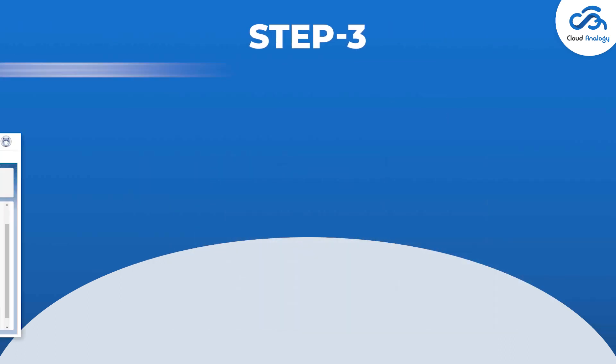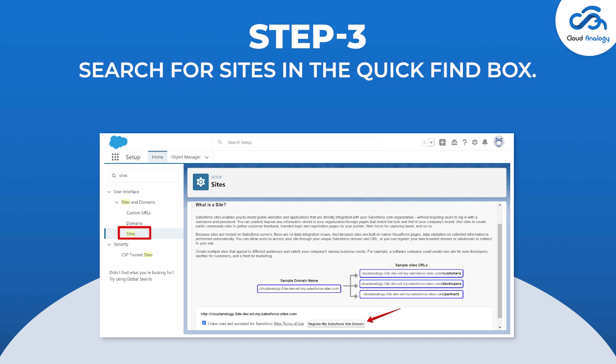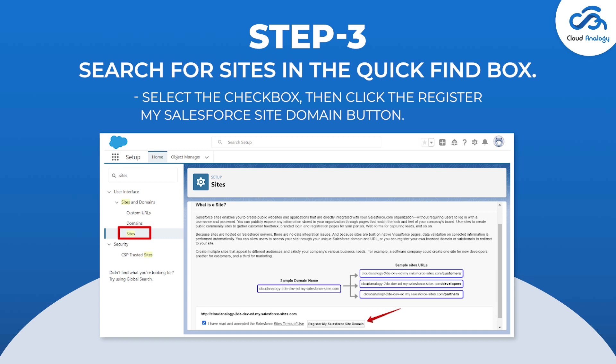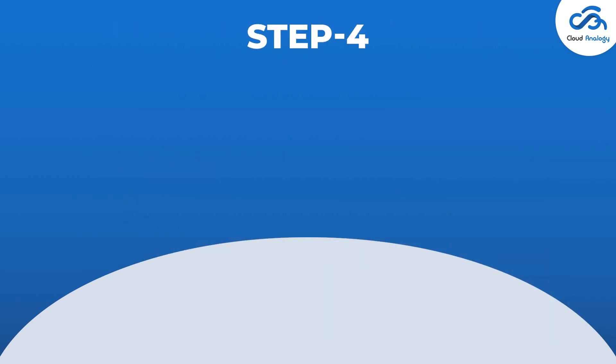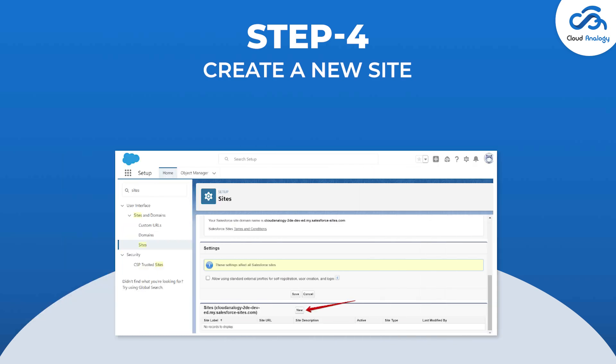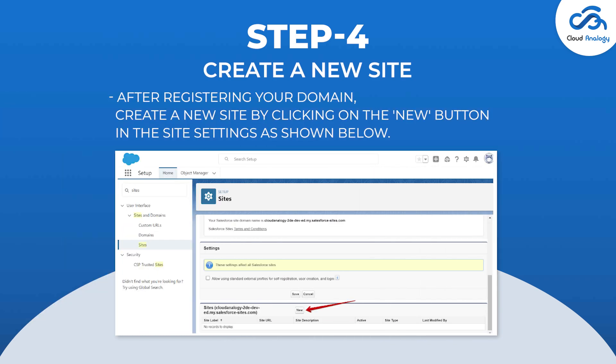Step 3: In your Salesforce org setup, search for Sites in the Quick Find box. Select the checkbox, then click the Register My Salesforce Site Domain button. Step 4: Create a new site. After registering your domain, create a new site by clicking on the New button in the Site settings as shown below.